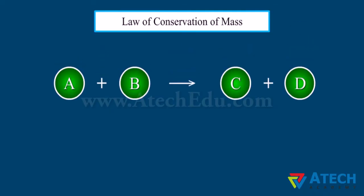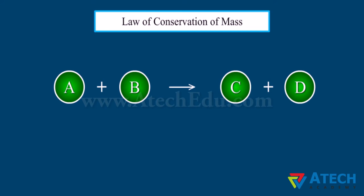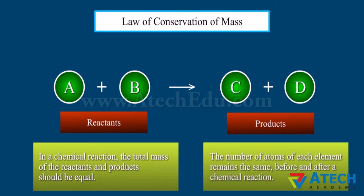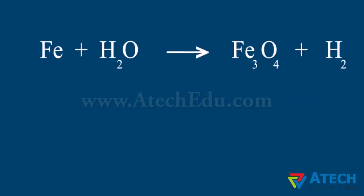The law of conservation of mass states that mass can neither be created nor destroyed in a chemical reaction. The total mass of the elements present in the products must be equal to the total mass of the elements present in the reactants. The number of atoms of each element remains the same before and after a chemical reaction.